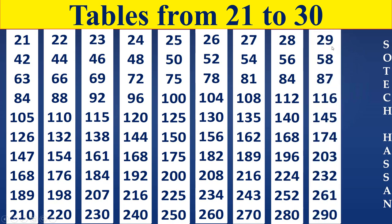29th Table. 29×1 is 29. 29×2 is 58. 29×3 is 87. 29×4 is 116. 29×5 is 145. 29×6 is 174. 29×7 is 203. 29×8 is 232. 29×9 is 261. 29×10 is 290.